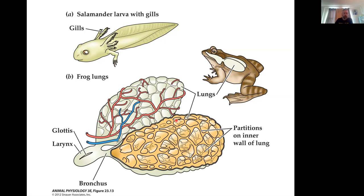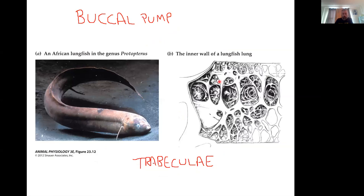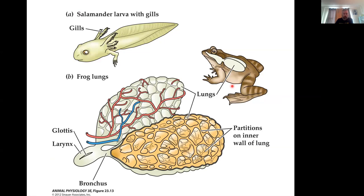But again, we're going to be stuck with that same kind of internal anatomy, where we've got these little trabeculae, but essentially one big interconnected chamber. And we call these unicameral lungs.